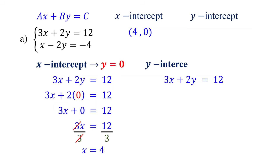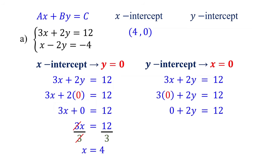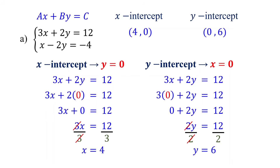The y-intercept occurs when x is 0, so set x to 0 and solve for y. 3 times 0 equals 0, and we have 2y equals 12. To isolate y, divide each side of the equation by 2. Cancel out the 2s. 12 divided by 2 is 6. So, the y-intercept of the first equation is (0, 6).